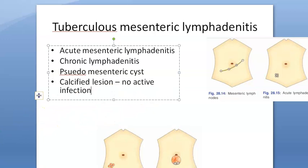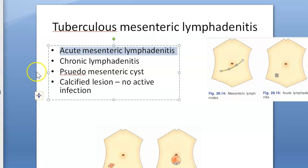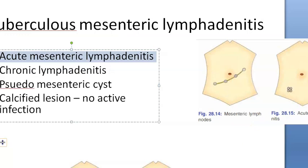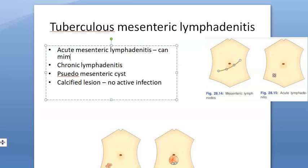Acute mesenteric lymphadenitis is common in children and can mimic acute appendicitis — you may think the child has appendicitis because of the similar location of pain.